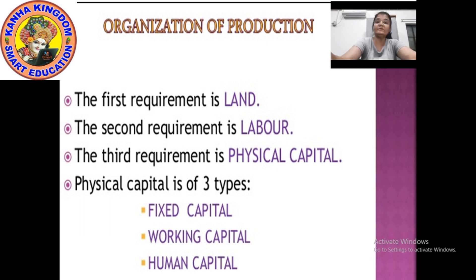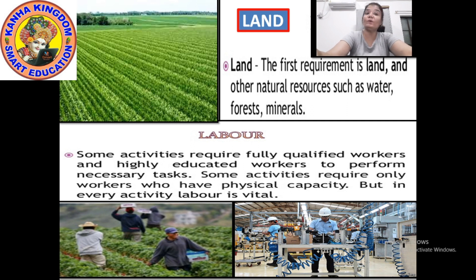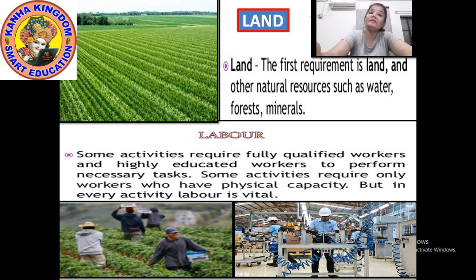Let's revise about land, labor and physical capital. Land is the first requirement — for that we need other natural resources also, that is water, forest and minerals. With land, we need the labor. Some activities require fully qualified workers who can do technical work or work on computers. For some activities we require workers who have physical capacity — to pick up loads and take them from one place to another. In other activities the labor needs both knowledge and physical capacity.